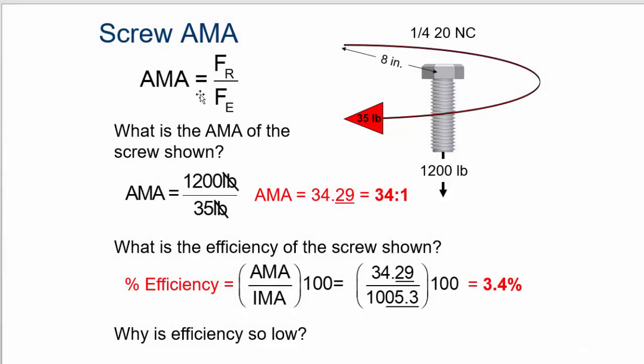Actual mechanical advantage is force resistance over force effort. We know that from before. It doesn't change. It's the same here with a screw. So what is the AMA of the screw shown? Well, here's a screw. It's the same. It's a 1/4-20 NC.